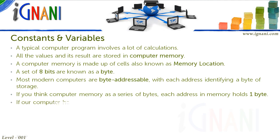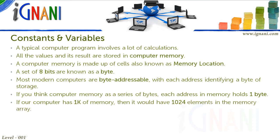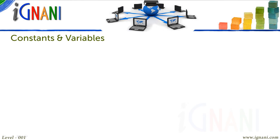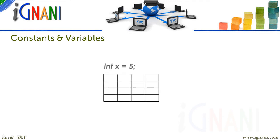If our computer has 1K of memory, then it would have 1024 elements in the memory array. In order to make it easier to access and use the values stored in these memory cells, they are given names. For example, a value 5 is stored in a memory location, which we name as X.